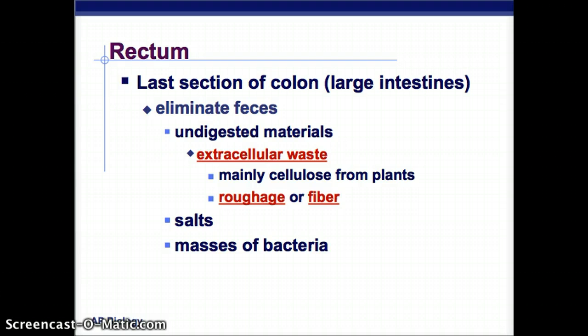The last section of the colon — also part of the large intestine — is the rectum, and that's where feces are eliminated. Anything that couldn't be digested, like extracellular waste, which is typically cellulose from plants and fiber, is eliminated there. It also gets rid of extra salt and masses of bacteria that have been neutralized through the acidic process of digestion.